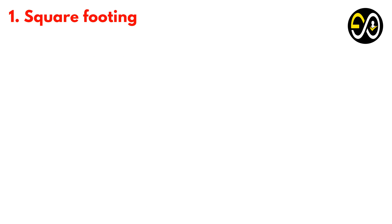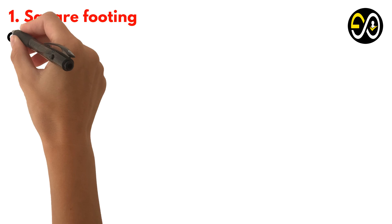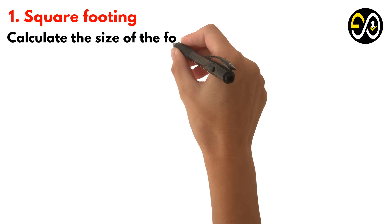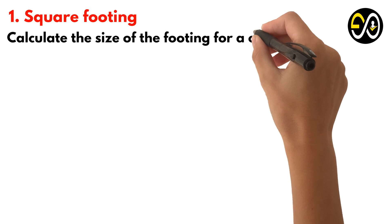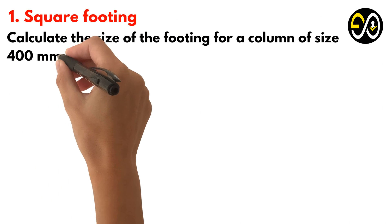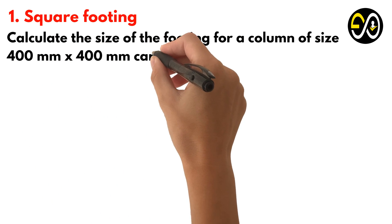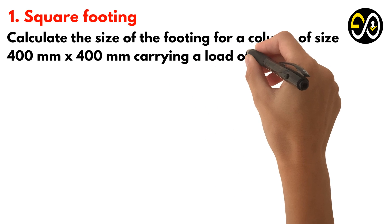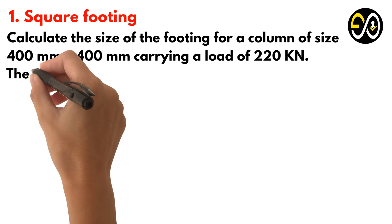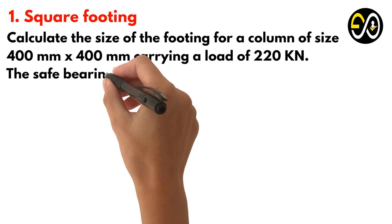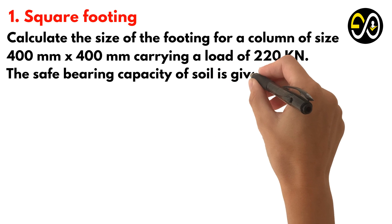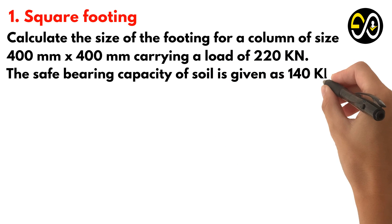Problem 1: Square Footing. Calculate the size of the footing for a column of size 400 mm by 400 mm carrying a load of 220 kN. The safe bearing capacity of soil is given as 140 kN per square meter.